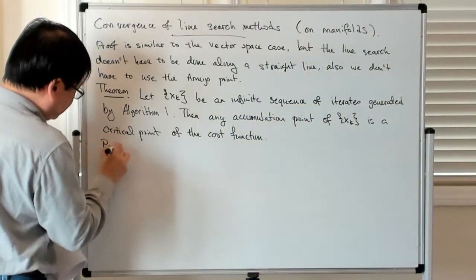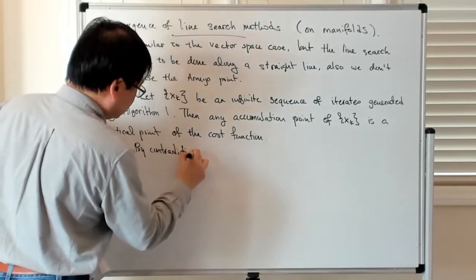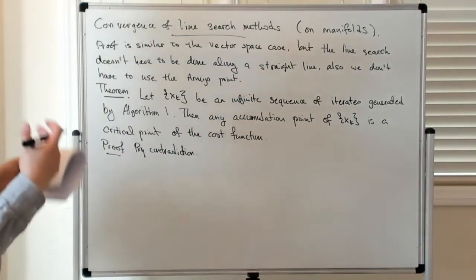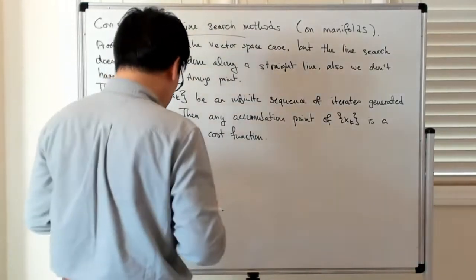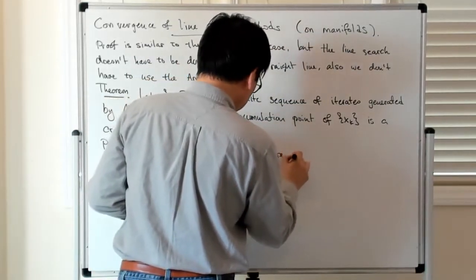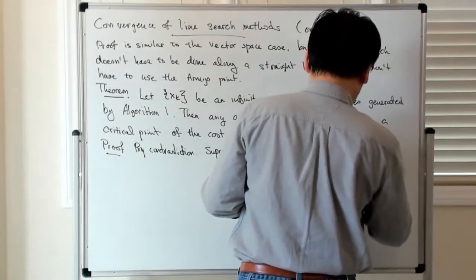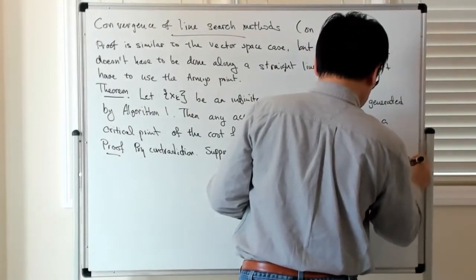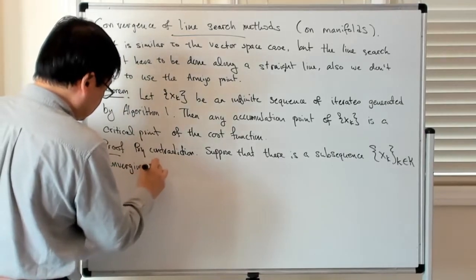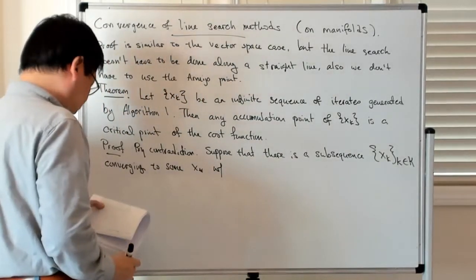So the way you prove this is by contradiction. You basically assume that you have an accumulation point of the sequence which is not a critical point of the cost function. So let's suppose that there is a subsequence x_k, with k in some set big K, converging to some x-star, with the property that the gradient of f at x-star is not zero.